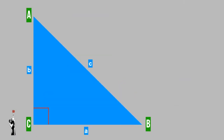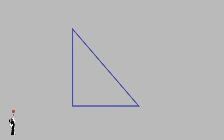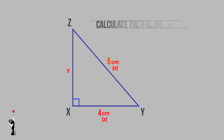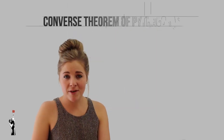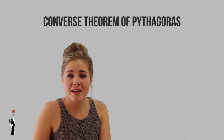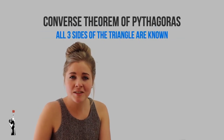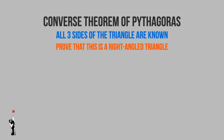In the first lesson we dealt with the Pythagorean theorem, where they told us that this is a right angle triangle and we needed to determine one unknown side. We had a triangle with two known sides and one unknown side, and they showed us that the angle is a right angle. In this lesson we'll be dealing with the Converse Theorem of Pythagoras, where they give you all three sides of the triangle and ask you to prove that this is a right angle triangle.